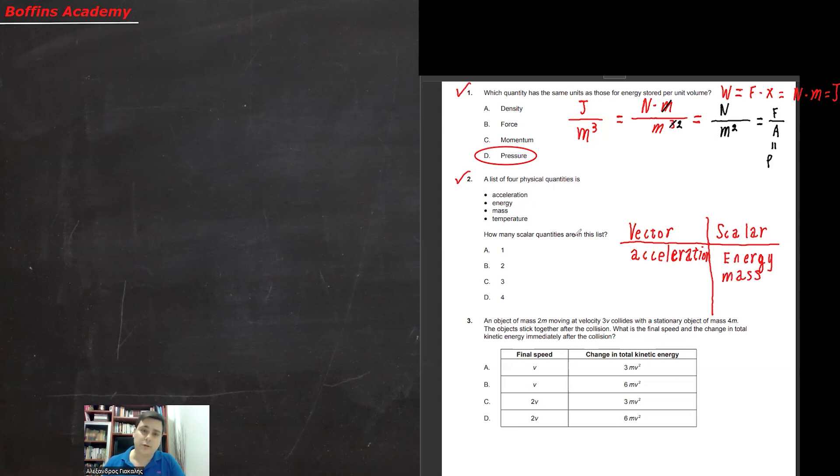And now we know that temperature is also innate. It's a state, it's a situation, it's a state that we can find an object. So temperature is here. Therefore, the correct answer is 3. How many scalar quantities are in this list? 3. So now we should go to question 3.